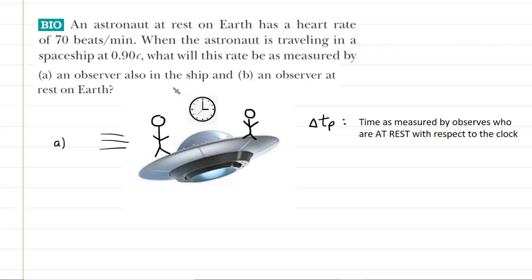The key to understanding Part A, in which we have to determine what an observer on a moving spacecraft would measure as another astronaut's heart rate, is to understand that the observer, as well as the astronaut whose heart rate is being measured, are at rest with respect to a hypothetical clock on board the spacecraft.